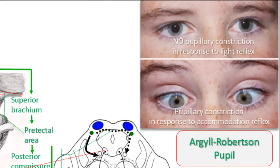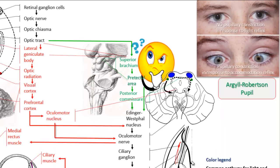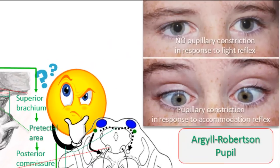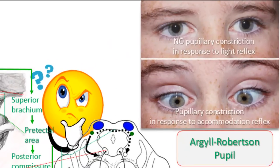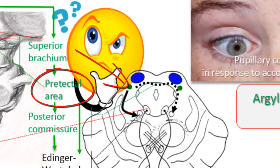In Argyll Robertson pupil, there is no pupillary constriction in response to the light reflex, but pupillary constriction can still happen in response to the accommodation reflex. This takes place because of the central dissociation of these reflexes, and in central nervous system syphilis where Argyll Robertson pupil can be observed, there is loss of pupillary constriction to light but not accommodation, because of the involvement of the pre-tectal area.